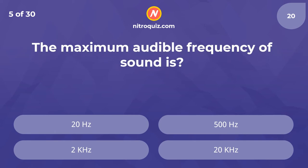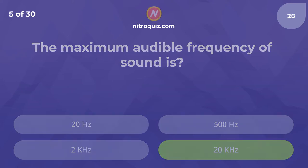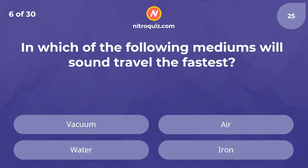The maximum audible frequency of sound is — the answer is 20 kilohertz. In which of the following mediums will sound travel the fastest? The answer is iron.